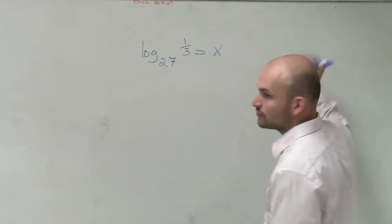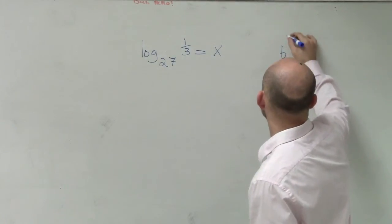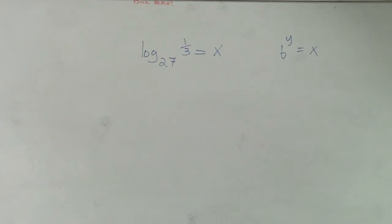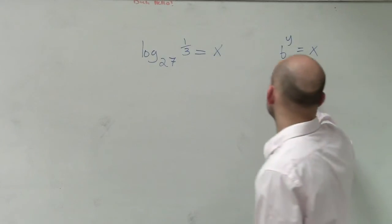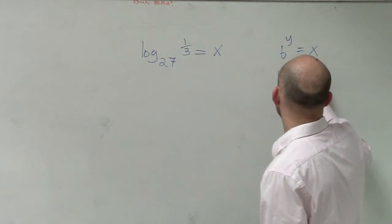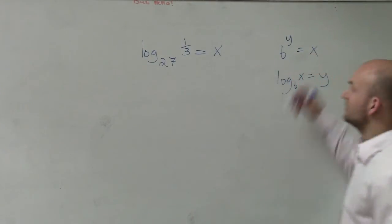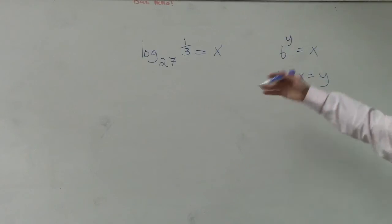the reason why we came up with logarithms is we had b raised to the y equals x, which states that log base b of x equals y. This is our formal definition of how we have logarithmic and exponential form.